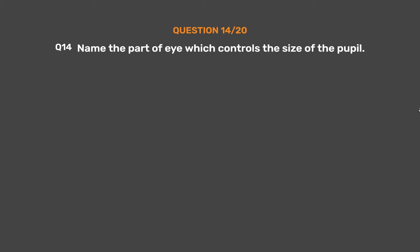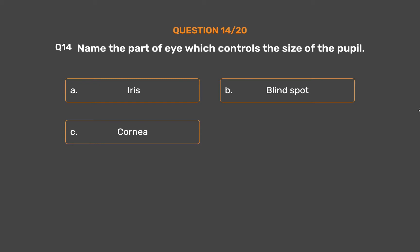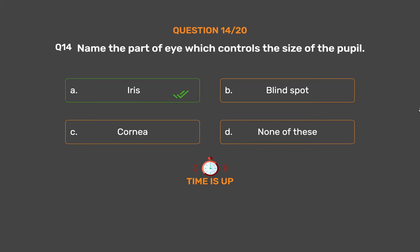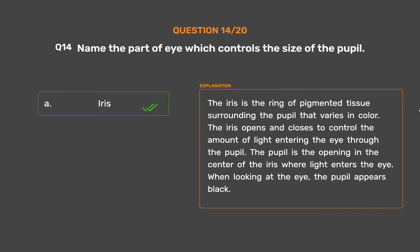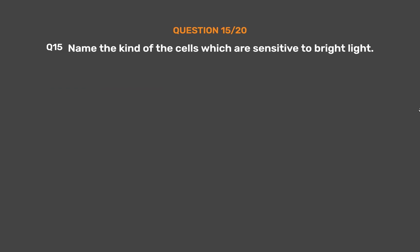Question number 14: Name the part of the eye which controls the size of the pupil. Option A: Iris. Option B: Blind spot. Option C: Cornea. Option D: None of these. The correct answer is Option A, Iris. The iris is the ring of pigmented tissue surrounding the pupil. It opens and closes to control the amount of light entering the eye through the pupil. The pupil is the opening in the center of the iris where light enters the eye, and it appears black when viewed.